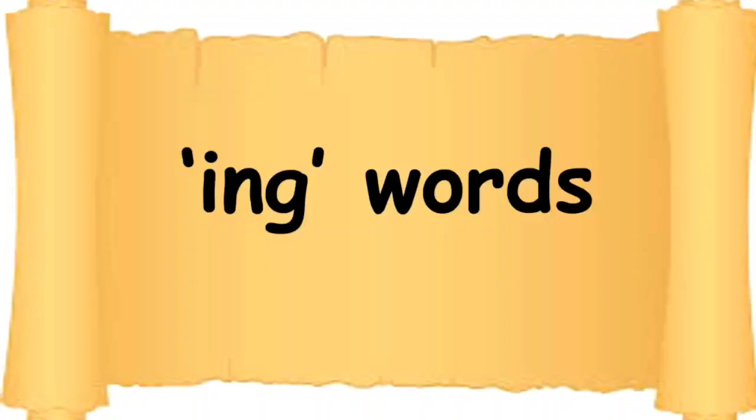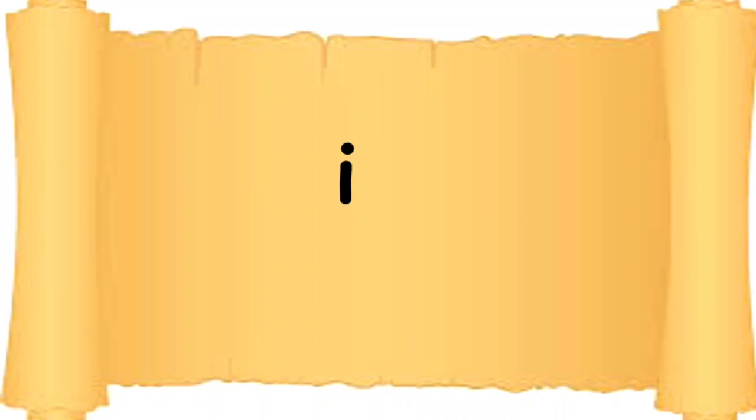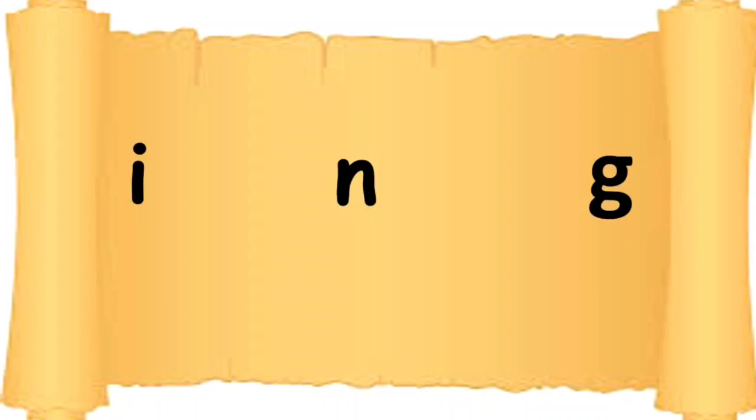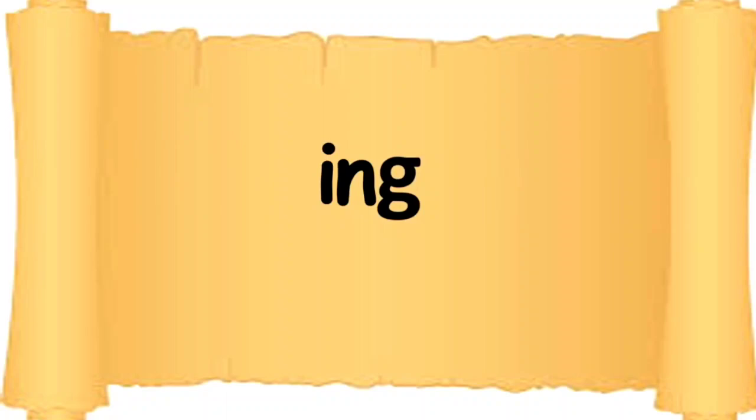Children, please repeat after me: the sound they make — ing. Now we will learn the words with the 'ing' sound through our PPT. Let's learn ing words. Which sound does this letter make? I. This letter makes the sound N. And here the sound G comes. You can see in the slide three letters: I says I, N says N, and G says G. Together they make the sound 'ing.' Children, please repeat after me: they make the sound 'ing.' Let's move on to the words.